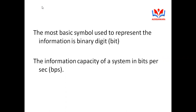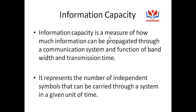The information capacity is a measure of how much information can be propagated through a communication system, and it is represented as a function of two parameters: first, the bandwidth; and second, the transmission time.